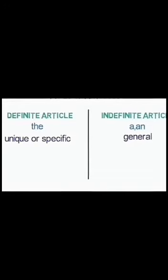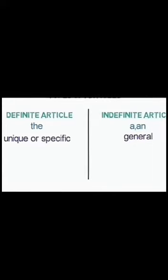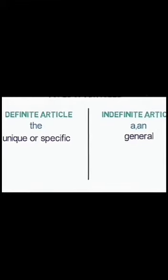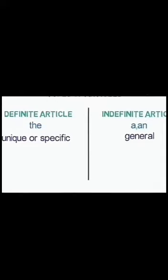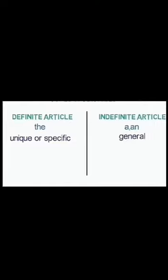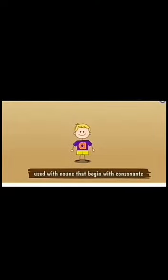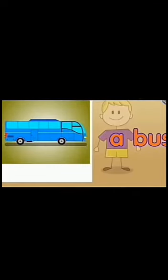Indefinite articles are A and AN, and these are used to refer to a noun that is not special. A is used with a noun that is not special and begins with a consonant sound. For example: a wasp, a zoo, a girl.